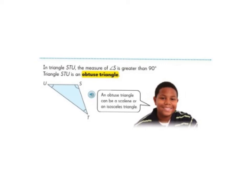An obtuse triangle can also be a scalene or an isosceles triangle.